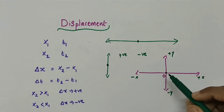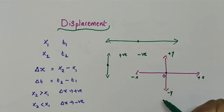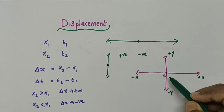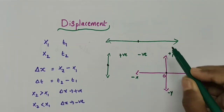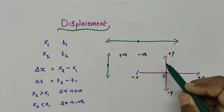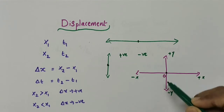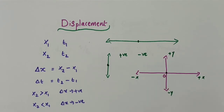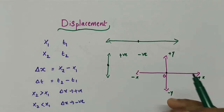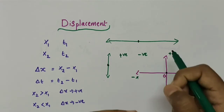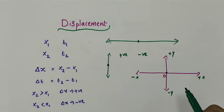Similarly, if the object moves along a vertical straight line path starting from a point, and it moves upward — along the positive y direction — the direction is specified by a positive sign. If it moves downward — along the negative y-axis — the direction is specified by a negative sign. So in one-dimensional motion, the two possible directions are specified by positive and negative signs.